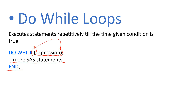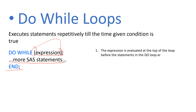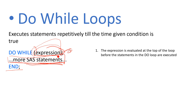There are some highlights for DO WHILE which we need to be careful about. The first point is: the expression is evaluated at the top of the loop before the statements in the loop are executed. So before executing the statement, the expression gets evaluated. When the expression matches the given condition, the statement gets executed. If it does not match, it terminates right there and does not proceed further.